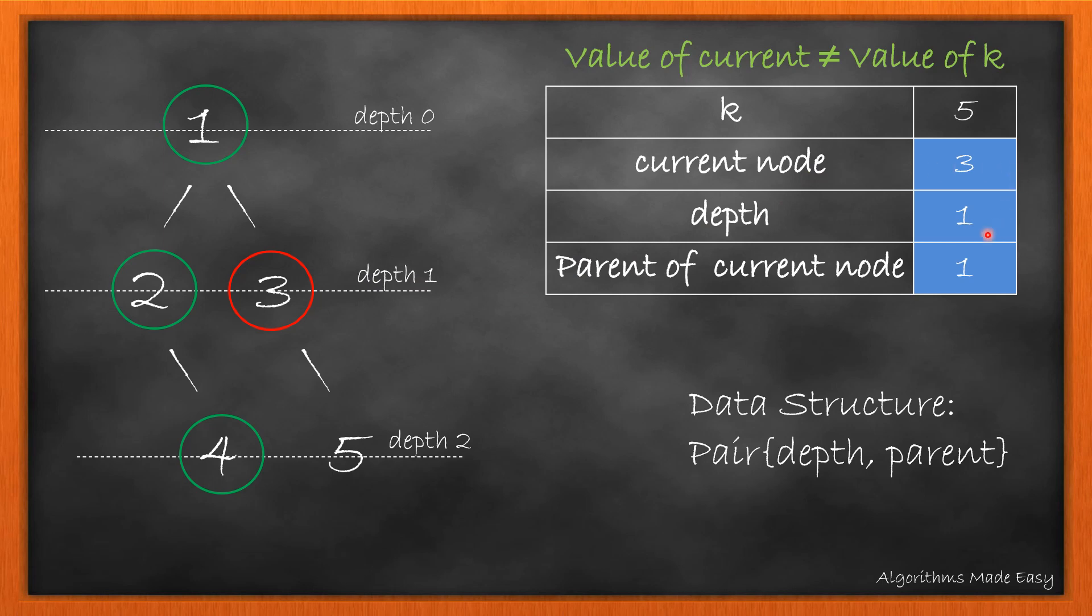Now current node becomes 3. Its depth will be 1 and the parent of the current node becomes 1. As the value of current and k are not equal, we move to right as its left is null.